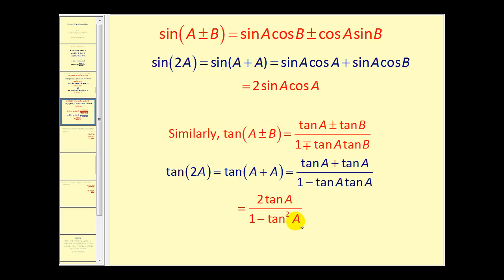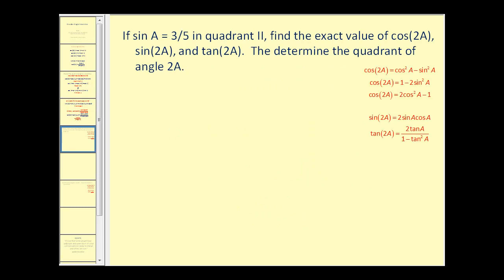Let's take a look at a couple of problems. Here we have sine A equals three-fifths with angle A in quadrant two. We want to find the exact value of cosine two A, sine two A, and tangent two A, and then determine the quadrant of angle two A. Looking at the identities, we can find cosine two A using just the given information, since we already know sine A.